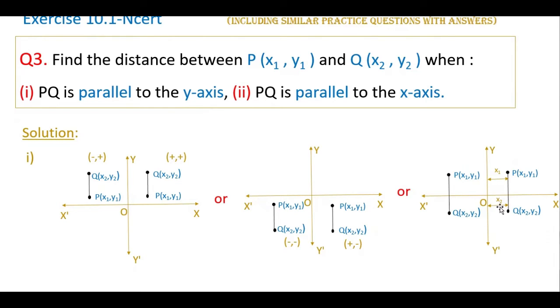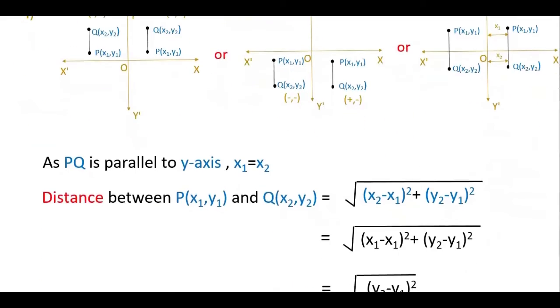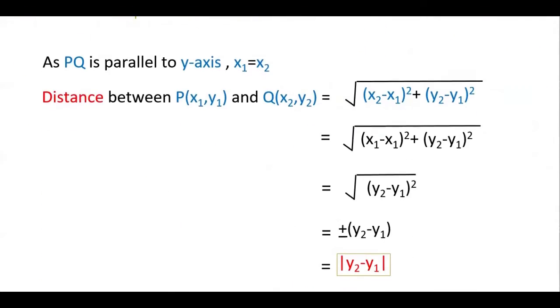If you observe here, x₁ and x₂ are equal because the line is parallel to the y-axis, meaning the x-coordinates are same. So if PQ is parallel to y-axis, then x₁ = x₂. Now distance between the two points is: square root of (x₂ - x₁)² + (y₂ - y₁)². Here x₂ = x₁, so it is zero. So square root of (y₂ - y₁)², that is ±(y₂ - y₁). So you can write this as |y₂ - y₁|.